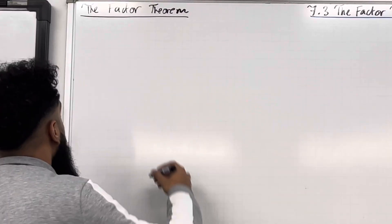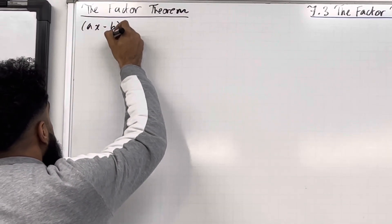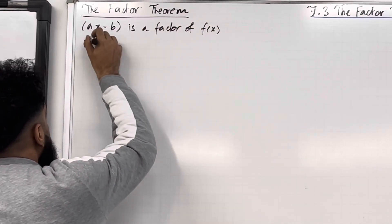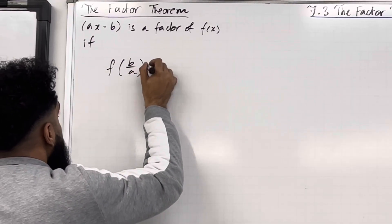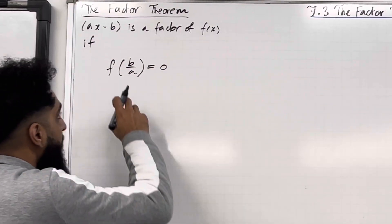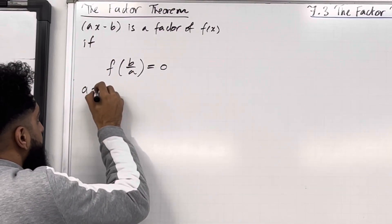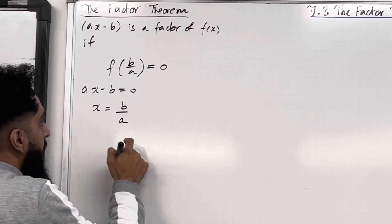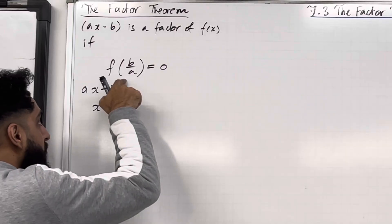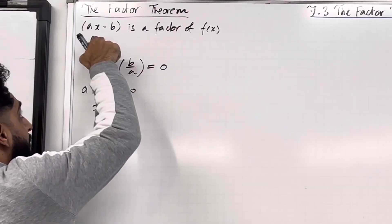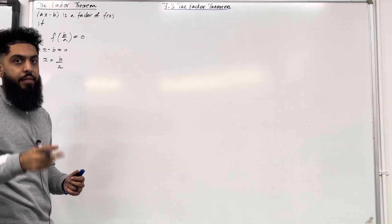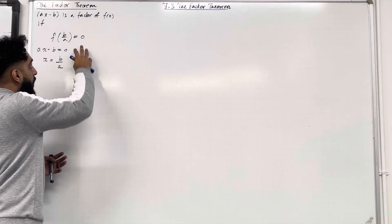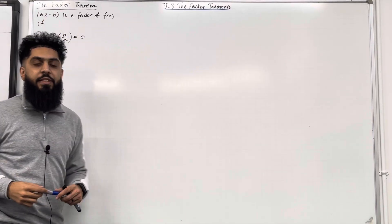So what does the Factor Theorem say? A linear (ax minus b) is a factor of the function f(x) if f(b/a) is equal to 0. We set the linear ax minus b equal to 0 and solve for x, giving x = b/a. If we substitute x = b/a into the function and the output is 0, then ax minus b is a factor of f(x). That 0 is essentially our remainder — if the remainder is 0, then ax minus b is a factor of f(x).